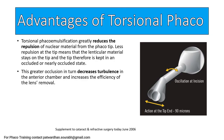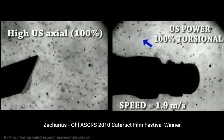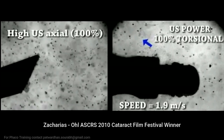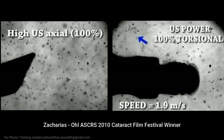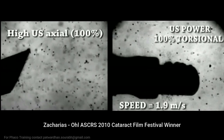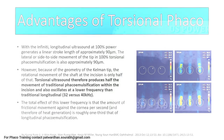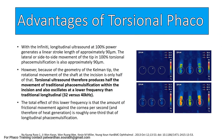Torsional FACO has several advantages. It greatly reduces the repulsion of nucleus material, meaning the lenticular material stays on the tip all the time. This further reduces turbulence in the anterior chamber and lens removal is very efficient. As shown by Dr. Zakarias in his award-winning video, torsional FACO has very minimal or negligible repulsion, and that is the main advantage.